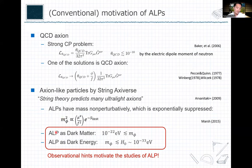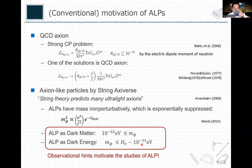Nowadays, axion-like particles are known as very good candidates for dark matter if their mass is bigger than 10^-23 electron volts, and they can also be good candidates for dark energy if their mass is smaller than the Hubble parameter at the present time — about 10^-33 electron volts.